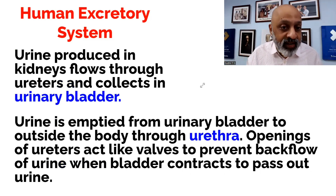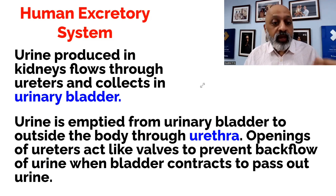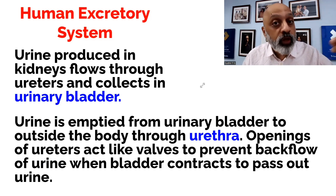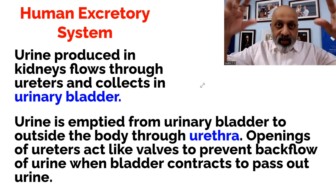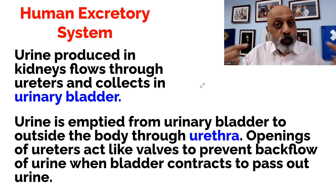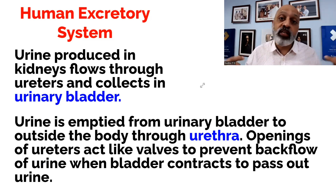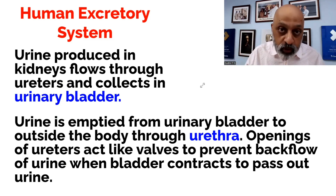Urine is produced in the kidneys, flows through the two ureters, and collects in the urinary bladder. The urine is then emptied from the urinary bladder to the outside of the body through the urethra. So four important parts are: the two kidneys, the hilum from where the ureter starts, the urinary bladder, and the urethra. The openings of the ureters act like valves to prevent backflow of urine when the bladder contracts.